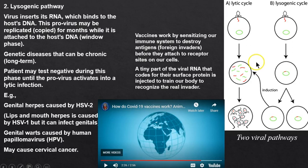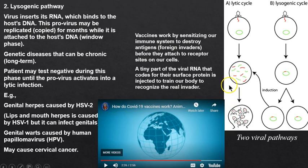Lysogenic is a genetic disease. The virus injects its RNA — same as lytic — but here's the difference: in something like a cold or flu, we get sick and then it's over. In lysogenic, the virus attaches to our DNA, and then every time there's mitosis or cell division, our body makes copies of it.